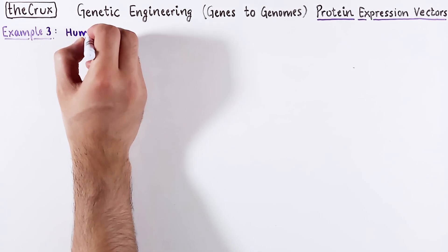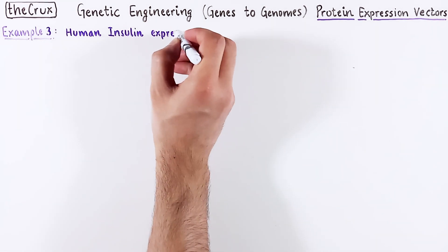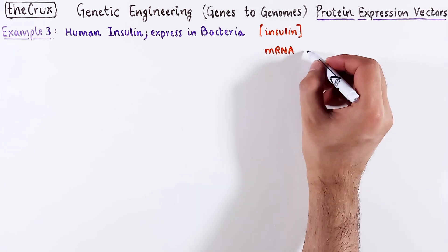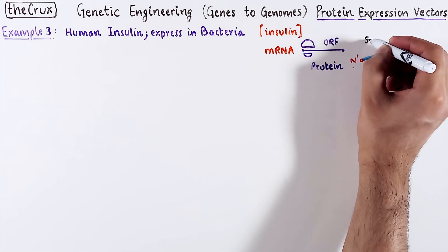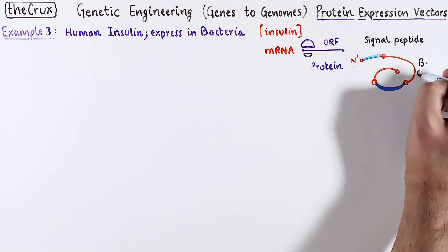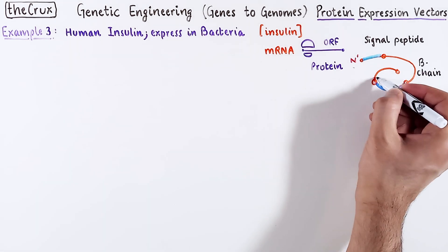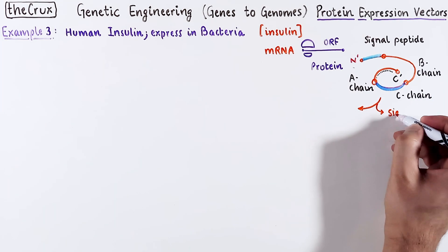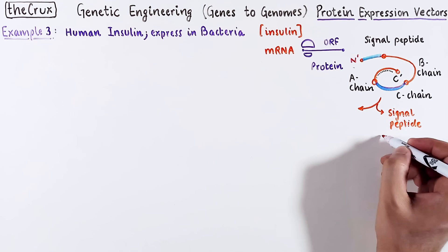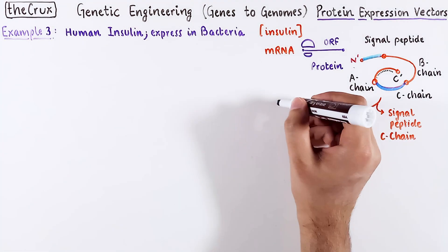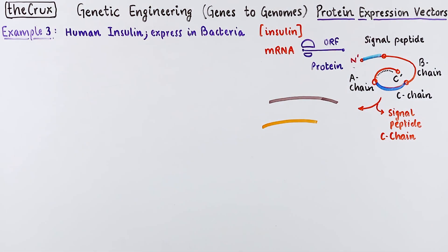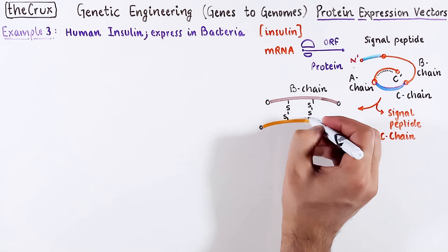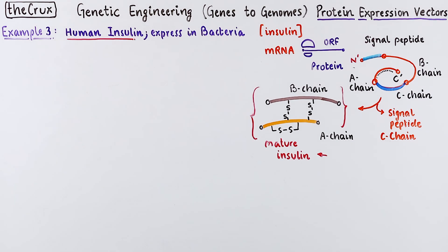Let's revisit the human insulin example from the previous video. Insulin is a tricky little protein. The insulin protein resulting from the translation has multiple parts: a signal peptide, a B chain, a C chain, and an A chain. After some processing and maturation, the signal peptide and the C chain is removed from this immature insulin to make the final product. The final, functional insulin only has A and B chains, chained by 3 disulfide bonds.